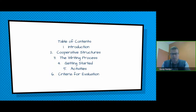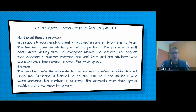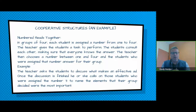There's a little introduction telling you where this came from. I talk about the different cooperative structures, the writing process from way back then and adapted, how to get started, the different activities in detail, and the criteria for evaluation. For each cooperative structure, what I did at the very beginning of the document is explain them all. This would be an example: Numbered Heads Together — in groups of four, each student is assigned a number. The teacher gives students a task, students consult each other making sure everyone knows the answer, then the teacher chooses a number and the student assigned that number answers.